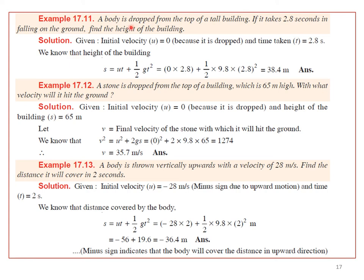Problem: A body is dropped from the top of a tall building and takes 2.8 seconds to reach the ground. Find the height of the building. Since it is dropped, u = 0. Using h = ½gt², with g = 9.8 and t = 2.8 s, we get the height of the building as 38.4 meters.